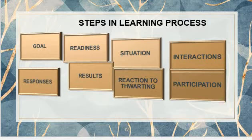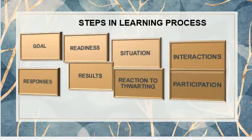The second step is readiness. Learning occurs when an individual is physically and mentally ready. After setting a goal, the learner must be prepared. Readiness includes physical strength, mental preparation, and past experience. A learner should be prepared for learning by love and affection, not by compulsion. The third step is situation — it provides the way of getting learning. If a situation does not allow attaining the goal, one must change behavior to adapt.